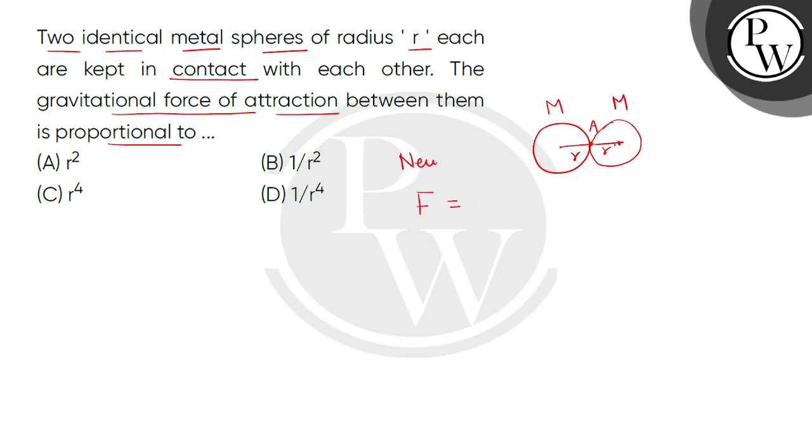So here we apply Newton's law of gravitation. According to that, F equals G M₁ M₂ divided by R square, where G is the gravitational constant and R is the distance. From this situation, we will get the force as M square divided by R square.